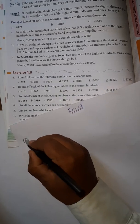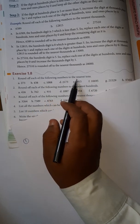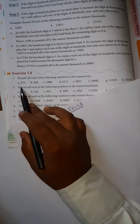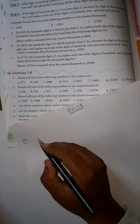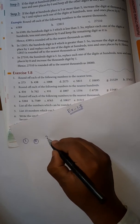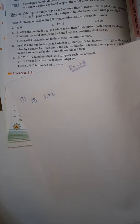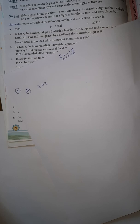In the first question of Exercise 1.8, you have been given: round off each of the following numbers to the nearest tens. So the first number I am taking is 273. Here you have to round off this number to the nearest ten.